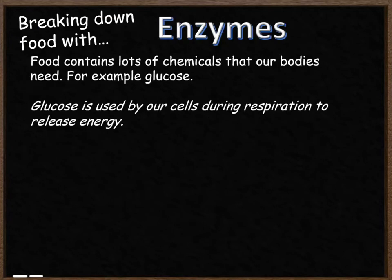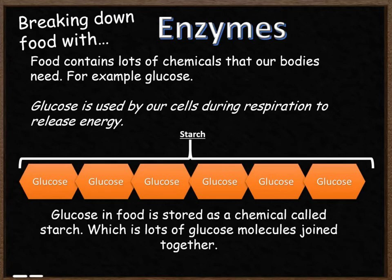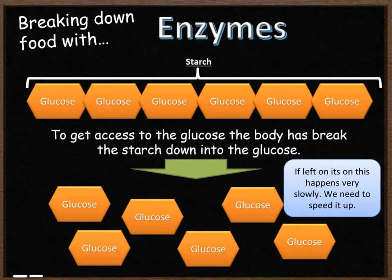We're going to look at one specific example of where enzymes are really useful to us, and that is in the breaking down of food molecules. Our cells need glucose — a chemical that stores energy — and we need it to release that energy through respiration. When we ingest food it often contains starch, which is a polymer made of lots of glucose molecules joined together. Our body needs glucose not starch, so it uses an enzyme to break the starch down into smaller glucose molecules, speeding up a process that would otherwise happen very slowly.